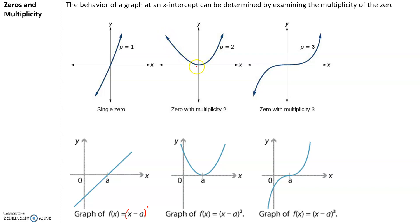If the graph touches the x-axis and then goes the other way without crossing, that has a multiplicity of 2. If the graph touches the x-axis at point A and bounces back, then f of x equals x minus A to the second power — degree of 2, multiplicity of 2. If at the zero the graph makes a sneaky S-shape, that has a multiplicity of 3. The factor is x minus A to the third power, degree of 3. To summarize: crosses the axis = degree 1; touches and bounces = degree 2; sneaky S-shape = degree 3.